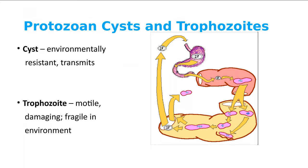The cyst is environmentally resistant and protective — it transmits the infectious agent. Here's a cyst going through the mouth into the stomach. It has four nuclei; each will break apart and become a trophozoite. The trophozoite causes infection in the small and large intestines. The trophozoite is active, motile, and free-swimming — it causes the infection, but it's very fragile in the environment and can only truly cause problems inside your body.